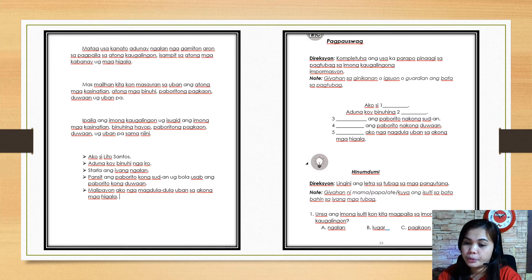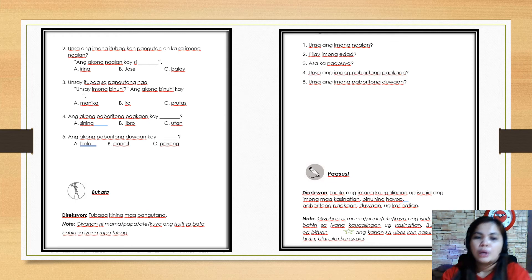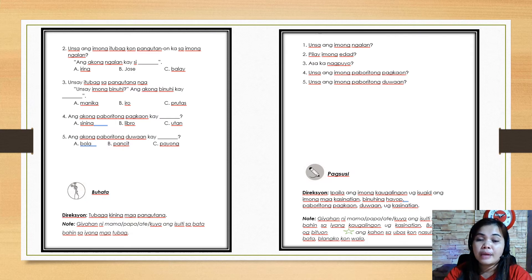Would you tell your name, would you tell the place, or would you tell about food? Just encircle the correct answer. Next number two: what will be your answer if somebody asks your name? Would you say ang akong ngalan kay si A: iring or cat, B: Jose, C: balay or house?